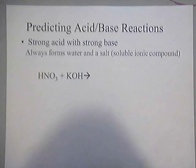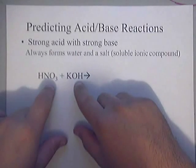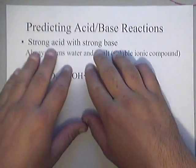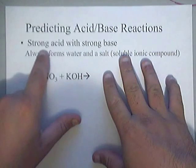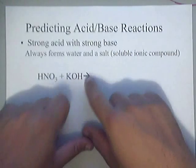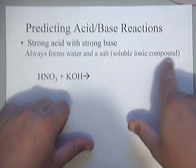All right folks, in this video I'm going to show you how to take acids and bases, react them together and get your products. I've got some simple rules up here. If you have a strong acid with a strong base, you're always going to make water and some type of salt, a soluble ionic compound.